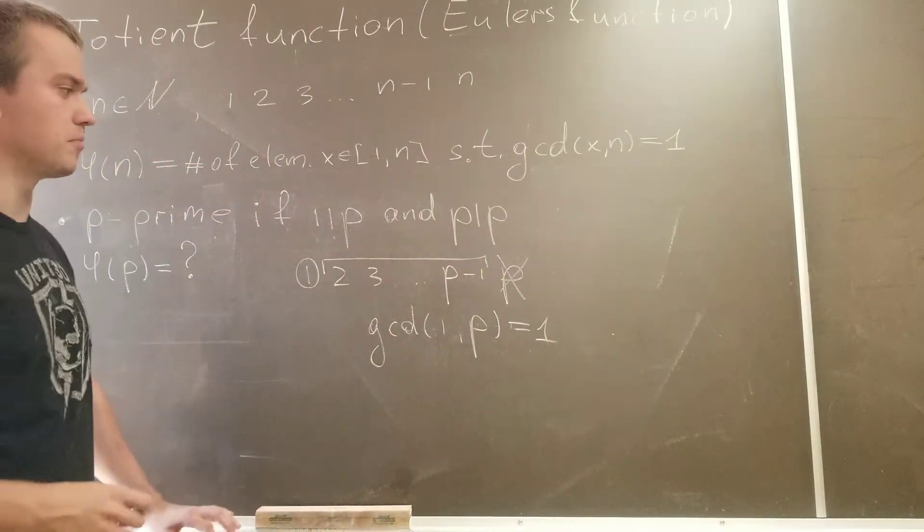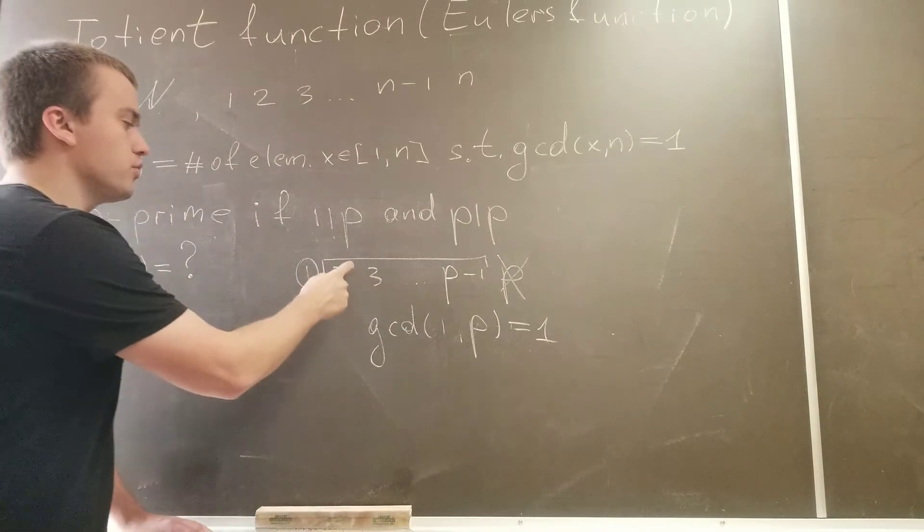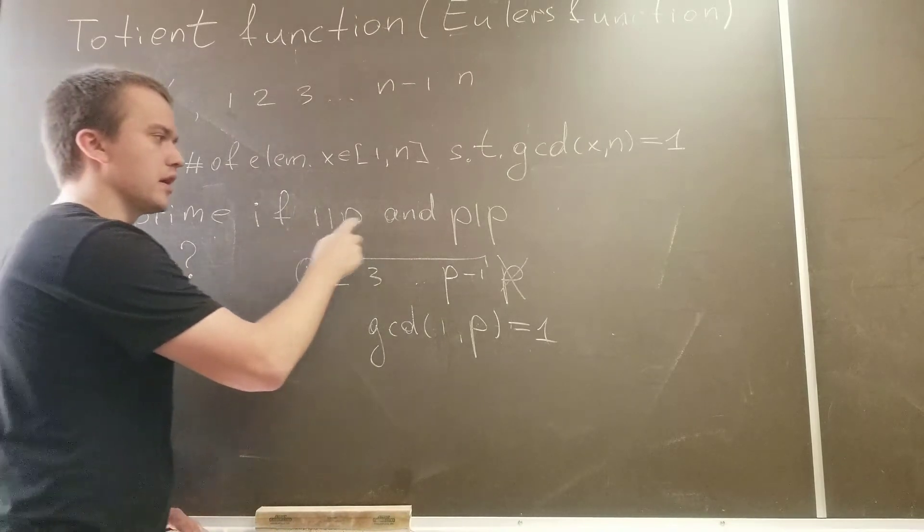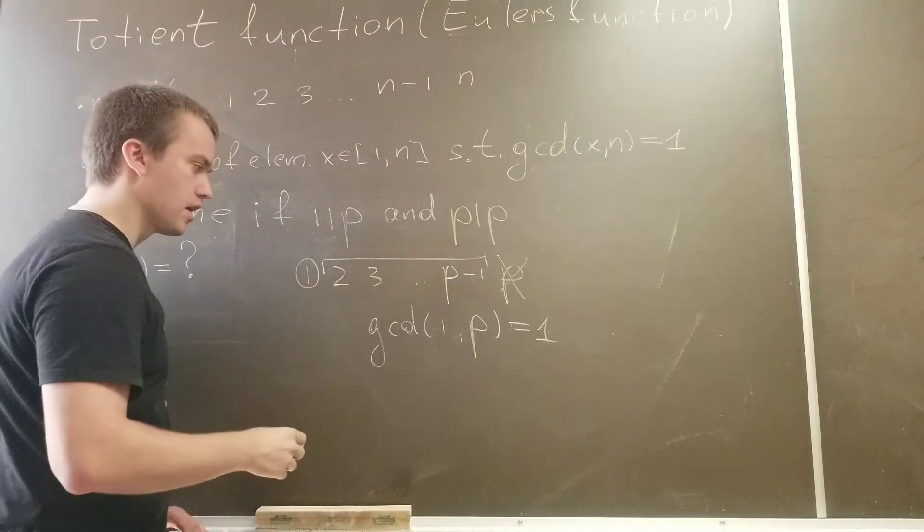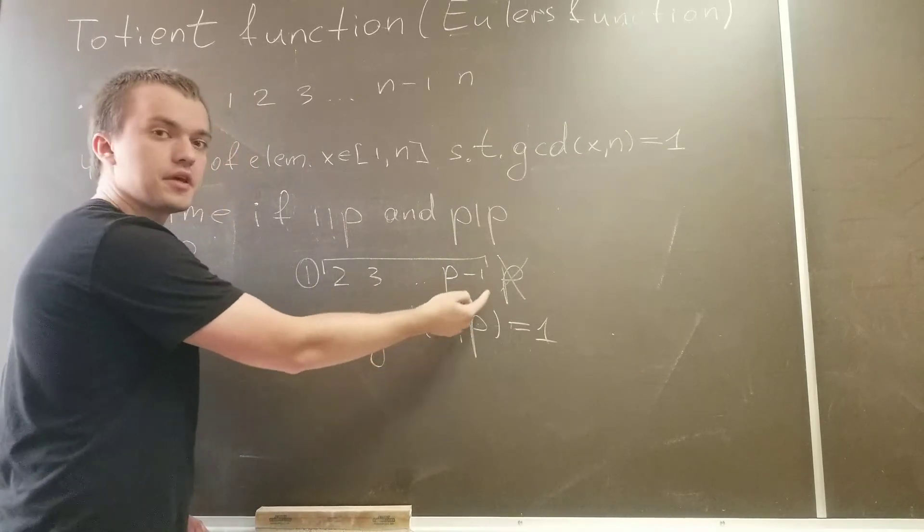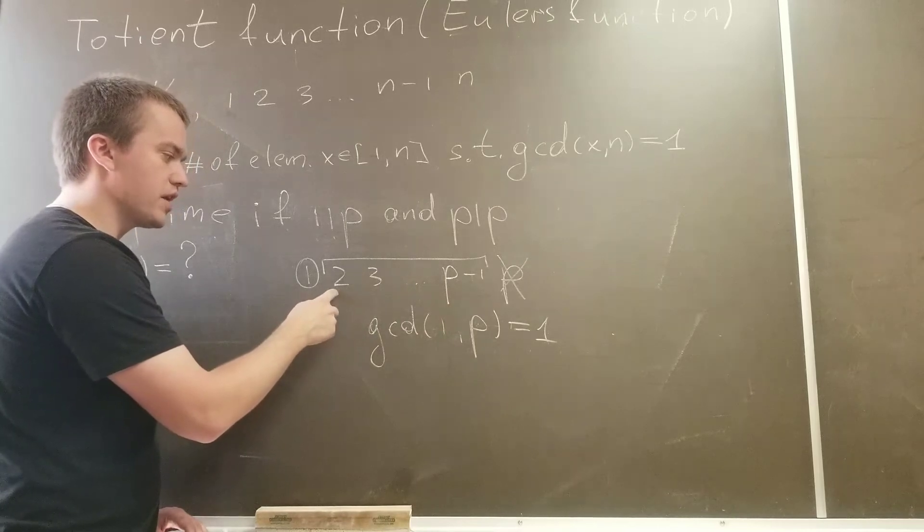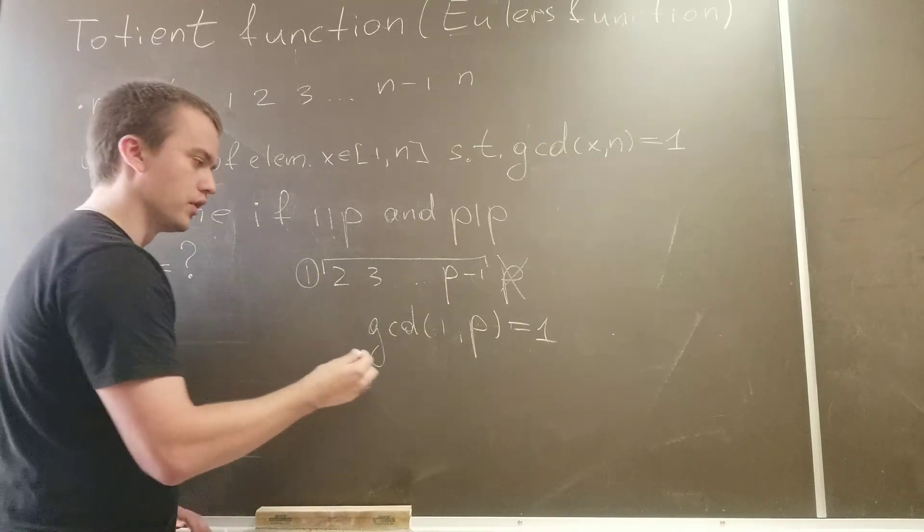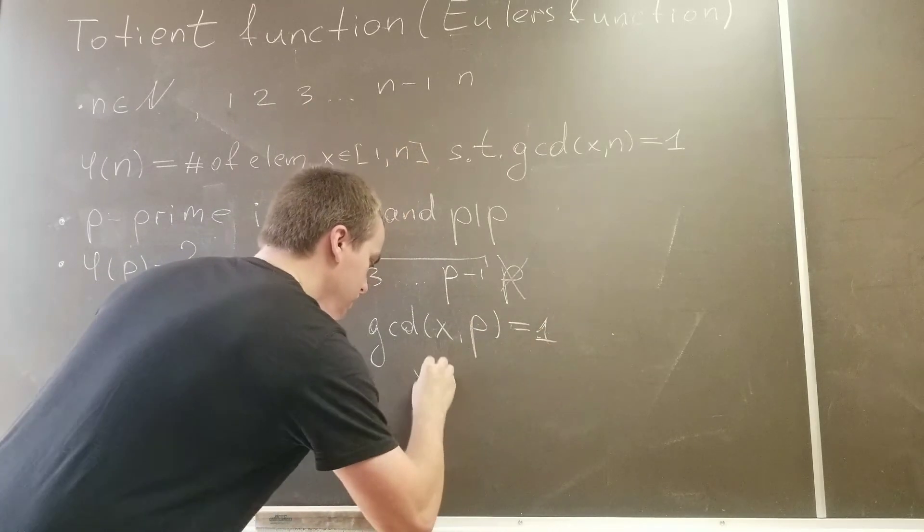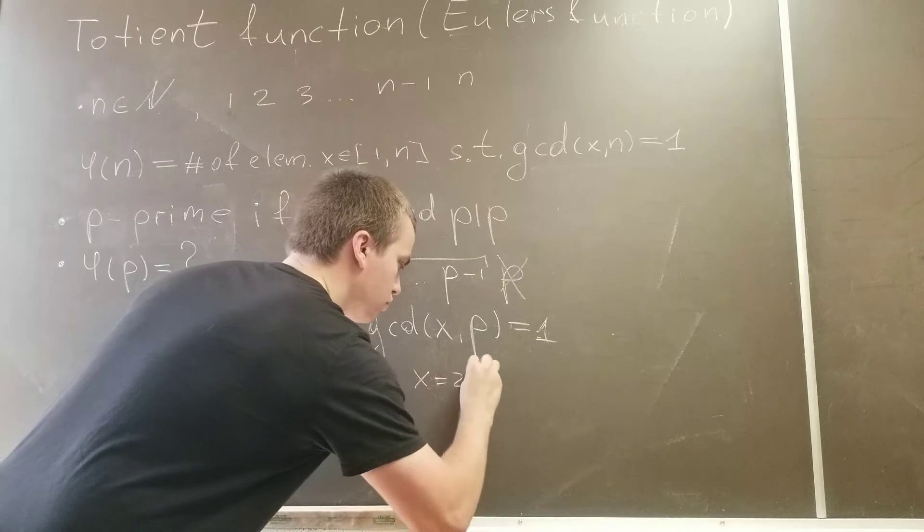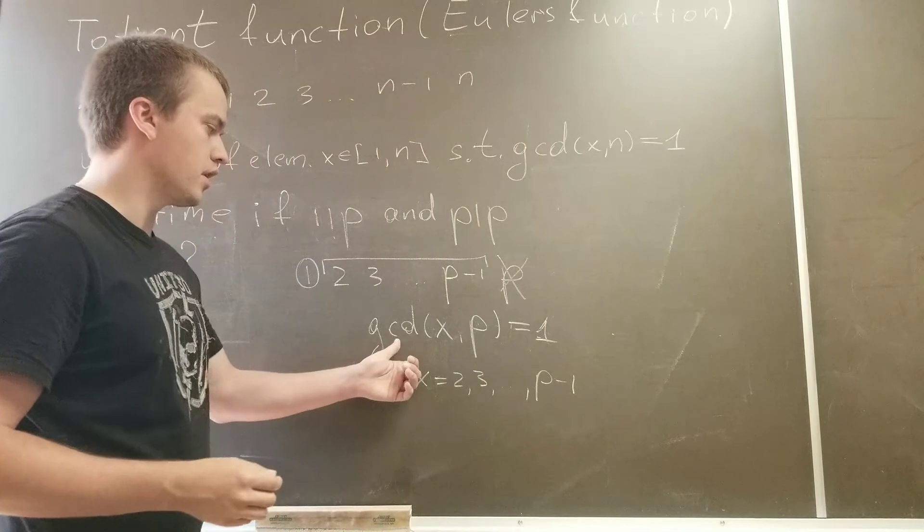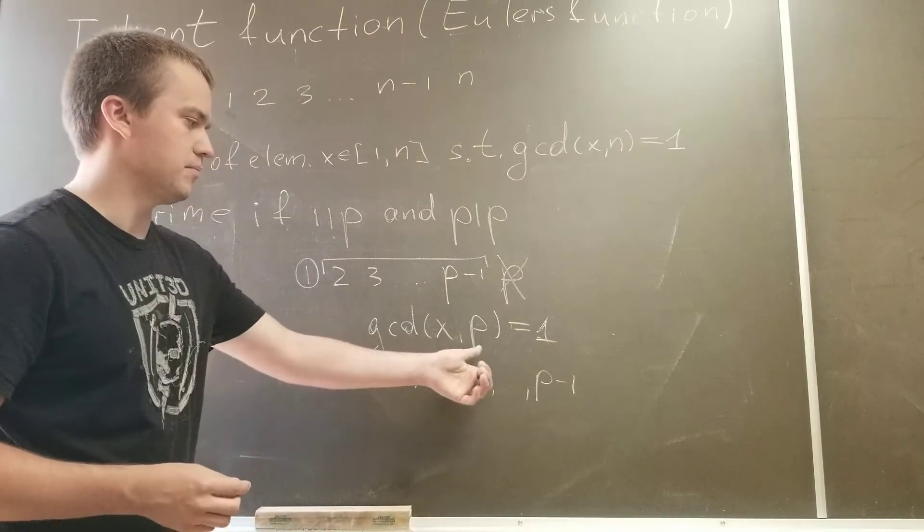But what about these numbers 2, 3, up to p minus 1? And here you're going to use the definition of prime number. So you know the only divisors of a prime number are 1 and itself p, so there is no any of these numbers that divide p. So the only sharing divisor with p is going to be equal to 1. So for any number x where x equals 2, 3, up to p minus 1, your gcd of x and p must be equal to 1.